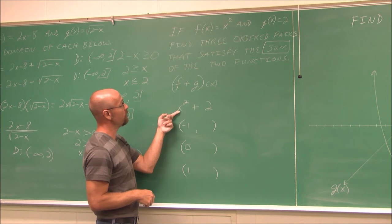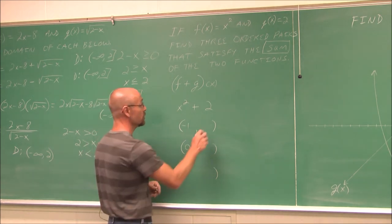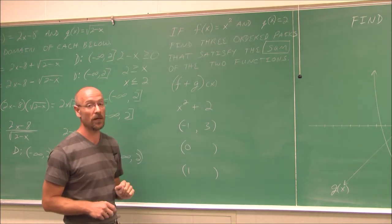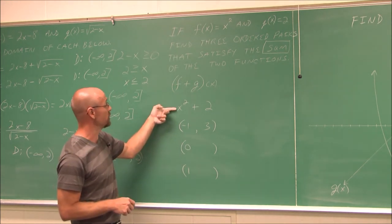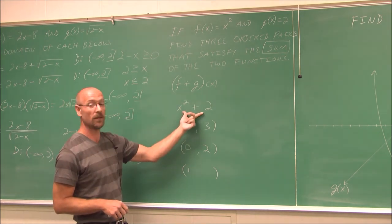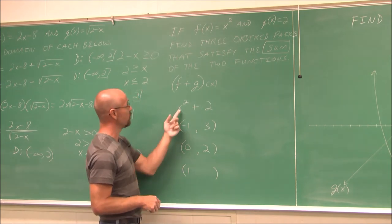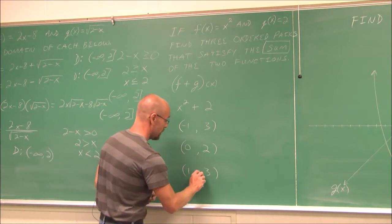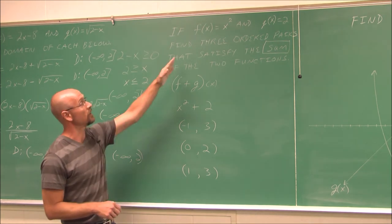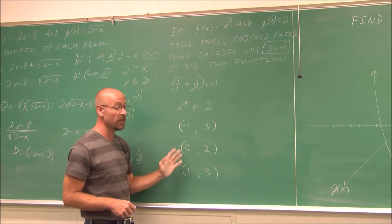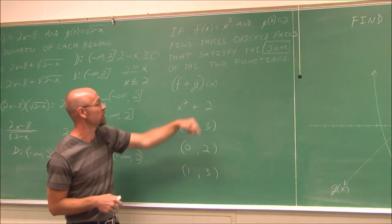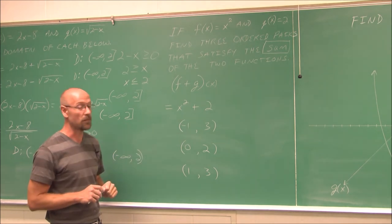All three of these ordered pairs satisfy f plus g of x equals x squared plus 2. You can choose three different values of x and find your own ordered pairs that satisfy the sum of these two functions.